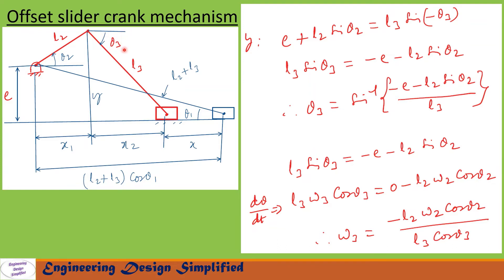Since clockwise rotation of theta3 is taken as negative, this becomes: e + l2·sin(theta2) = l3·sin(−theta3). After rearranging, we get l3·sin(theta3) = −e − l2·sin(theta2), so theta3 = sin⁻¹((−e − l2·sin(theta2)) / l3).